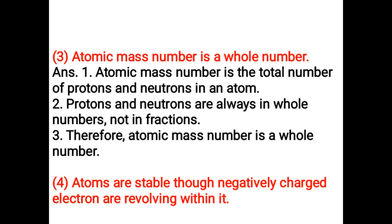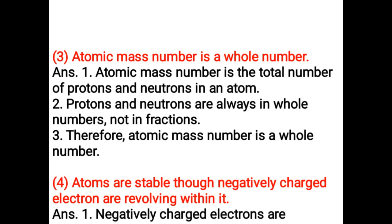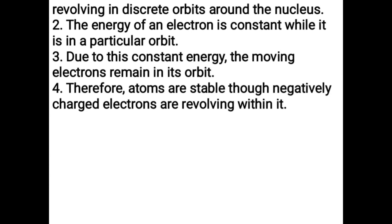Atoms are stable even though negatively charged electrons are revolving within them. The energy of an electron is constant while it is in a particular orbit. Due to this constant energy, the moving electron remains in its orbit. Therefore, atoms are stable even though negatively charged electrons are revolving within them.